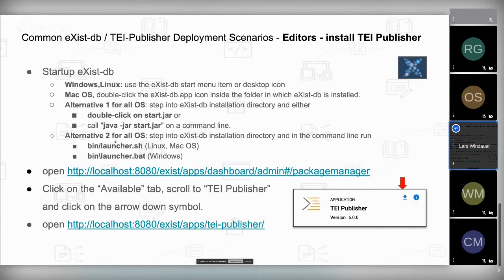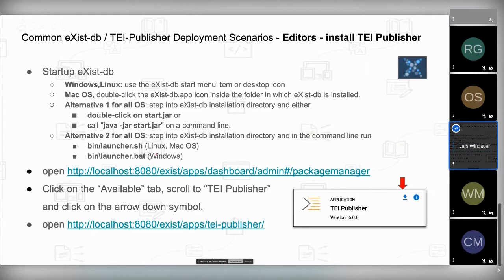That's the easiest way to start eXist-DB. You can also look in the eXist-DB installation directory and find a start.jar file — double-click it or call java -jar start.jar from the console. That opens the launcher and puts an eXist-DB icon in your menu bar. Alternatively, step into the eXist-DB folder and call bin/launcher.sh for Linux and Mac, or bin\launcher.bat for Windows.